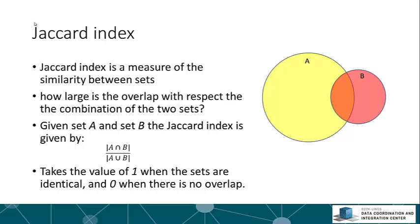For example, genes that are found in a meta-analysis to be associated with diabetes and genes that are members of a KEGG pathway. Something you might see very often in the literature is the use of the Jaccard index. This is essentially a measure of the similarity between two sets — how large is the overlap between the sets with respect to the combination of those two sets.